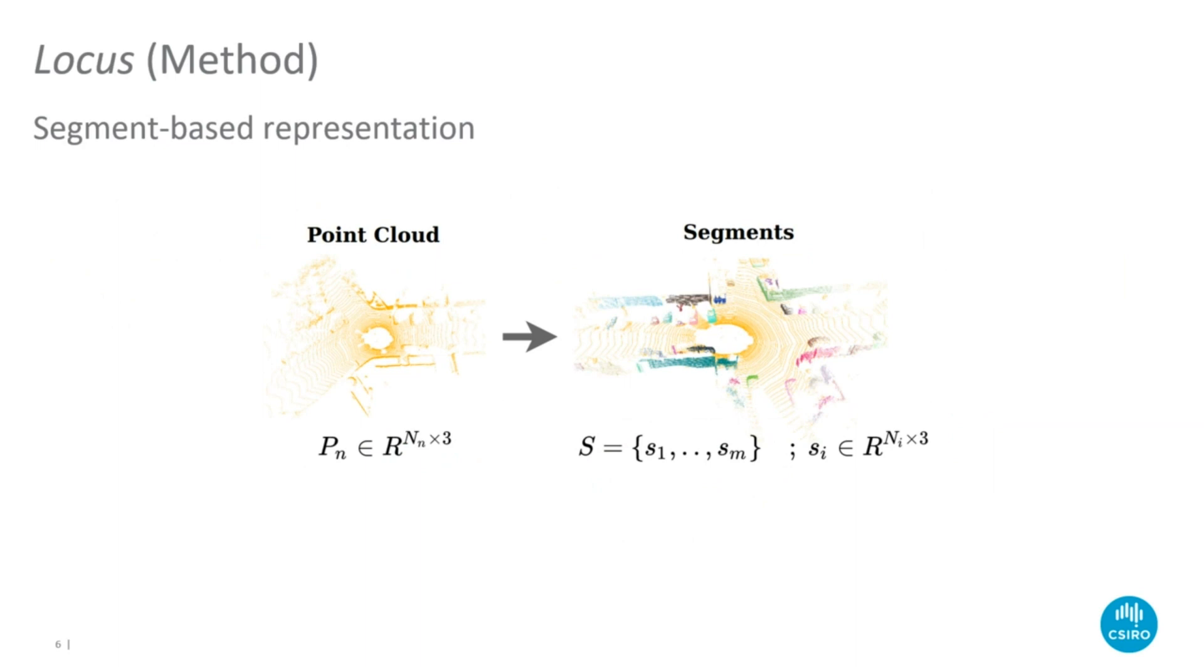Segments are generated by first removing the ground plane from the point cloud and then extracting Euclidean clusters of points. The number of segments M depends on the environment and the range of the sensor.